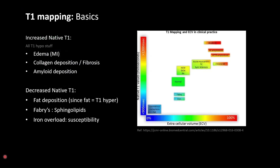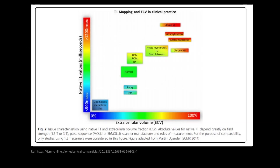Looking at some examples: edema, collagen deposition, and fibrosis — occurring in acute and chronic MI — and deposition diseases like amyloidosis will all have a high T1 value. In very few conditions like fat deposition, Fabry disease (where sphingolipid deposition occurs), or iron overload, there will be a decreased T1 value due to susceptibility effects. This chart shows normal ECV and T1 values; most pathologies show higher T1 values except Fabry disease, iron deposition, and lipomatous metaplasia.